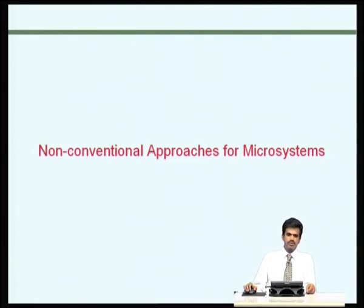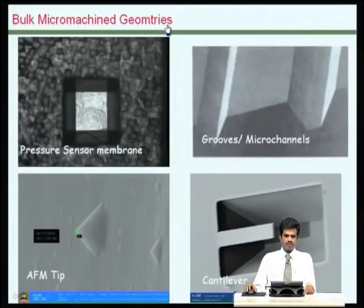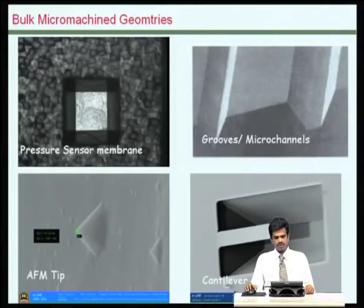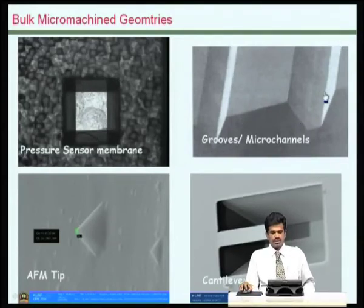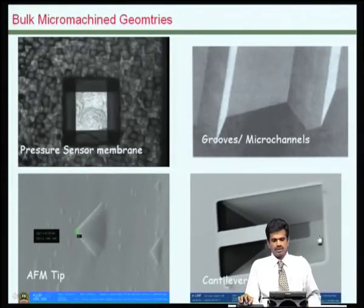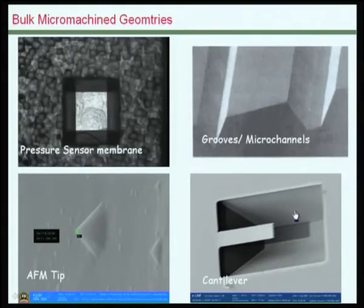Good morning, my name is Vinoy. Today I will talk to you about some of the non-conventional approaches for building micro systems. As you may recall, we have talked about bulk micro machining for several geometries of micro systems, such as for the case of pressure sensors, to build grooves or channels, to build tips for AFM, and even for building cantilever kind of geometries with a cavity below.